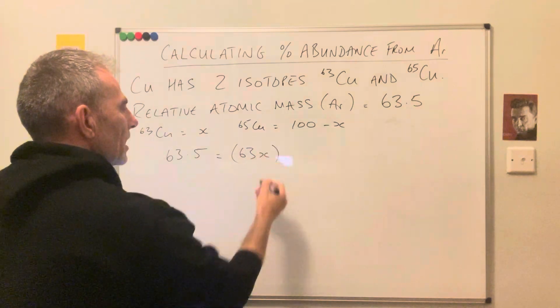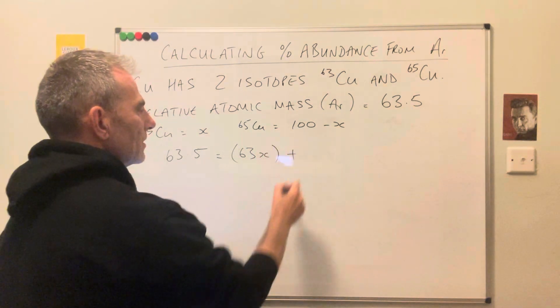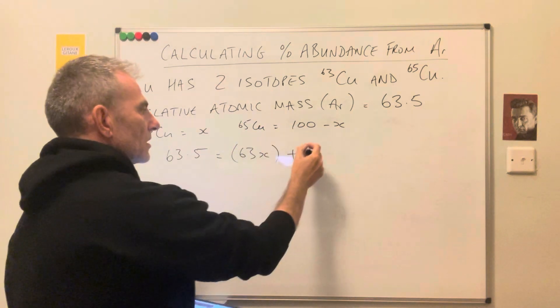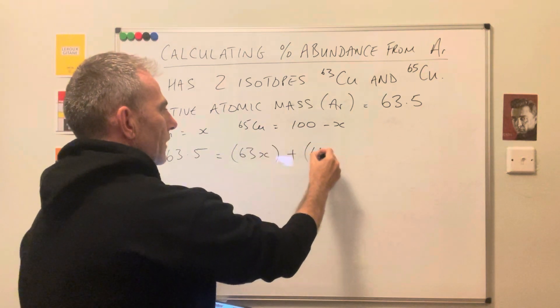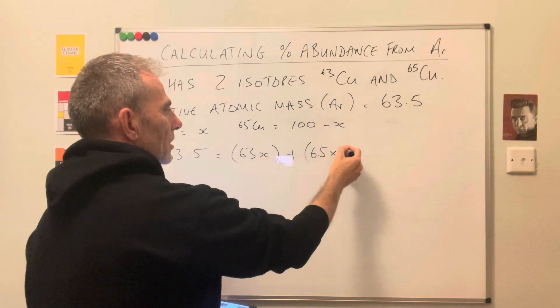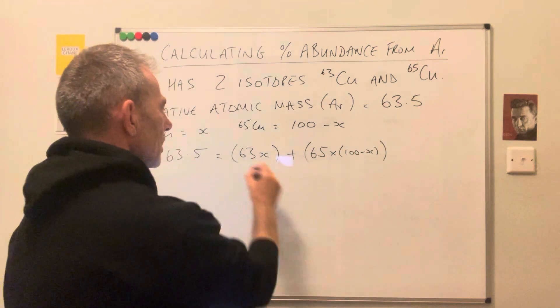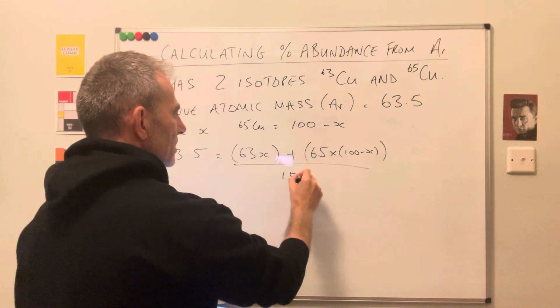And then we're going to add that to the next isotope times its abundance, so that's 65 times 100 minus x. And this is all over 100 because we're dealing with percentages.